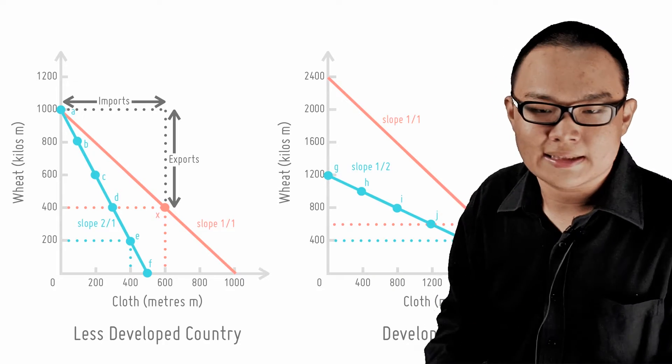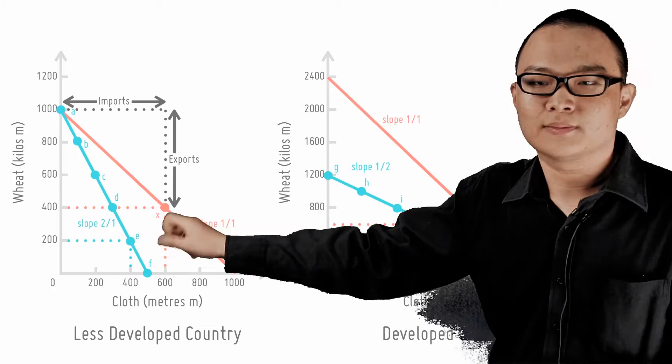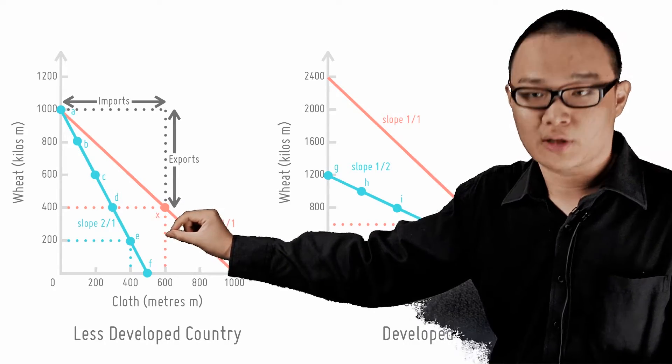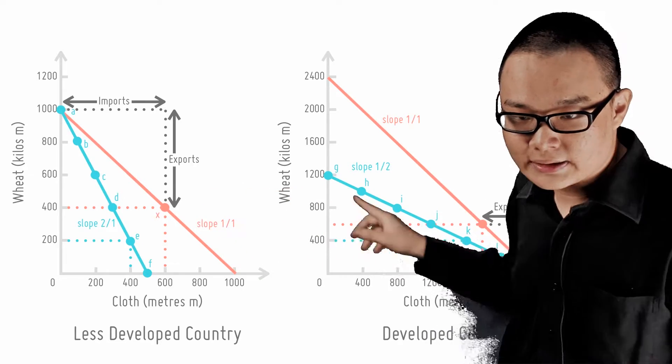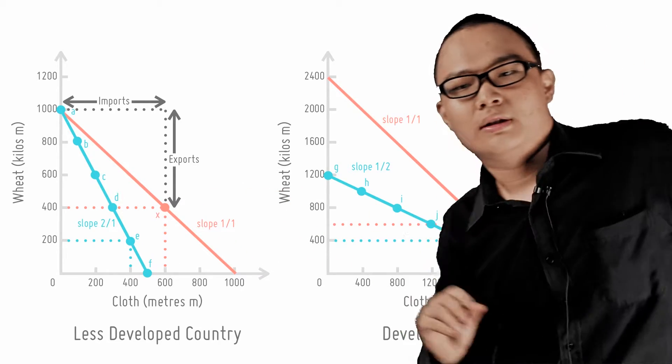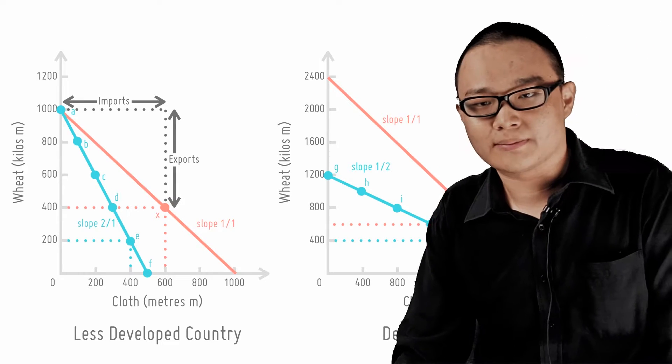Before trade, we assume that the LDC consumes at point E, 200 kilograms of wheat and 400 meters of cloth. We assume that the DC consumes at point K here, 1,600 meters of cloth and 400 kilograms of wheat.